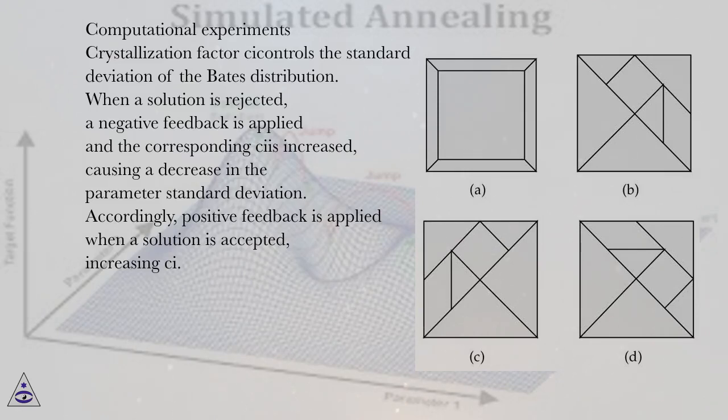Computational experiments. Crystallization factor C controls the standard deviation of the Bates distribution. When a solution is rejected, a negative feedback is applied and the corresponding C is increased, causing a decrease in the parameter standard deviation. Accordingly, positive feedback is applied when the solution is accepted, increasing C.